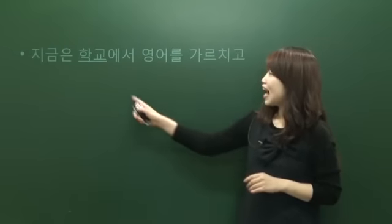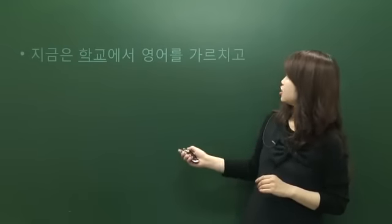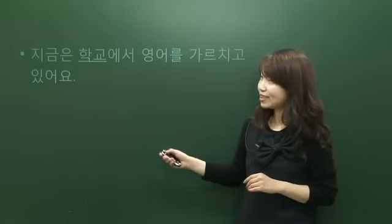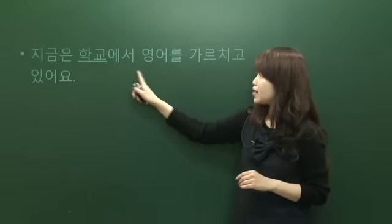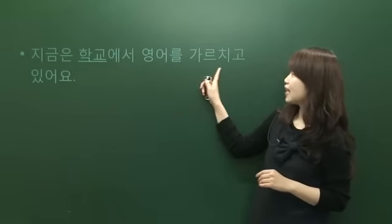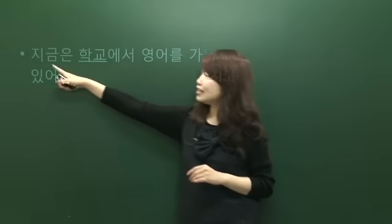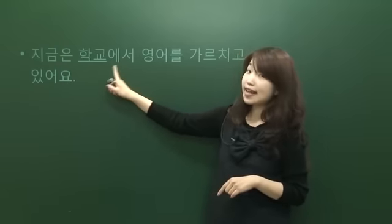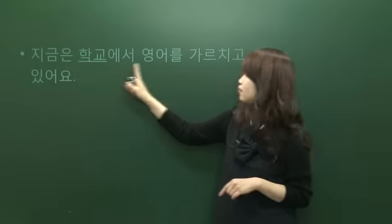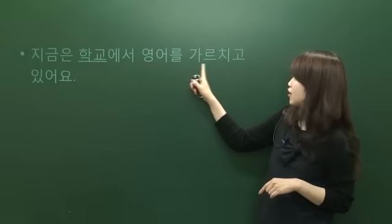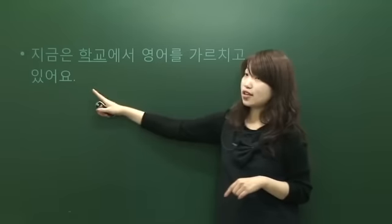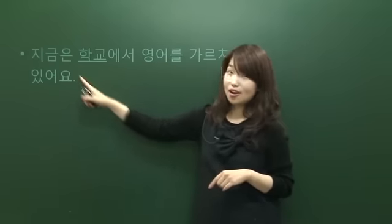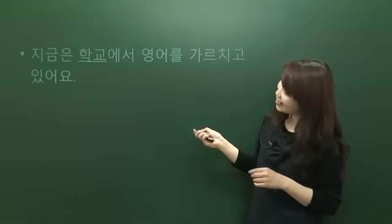지금은 학교에서 영어를 가르치고 있어요. 지금 means now. 학교에서 means at the school. 영어를 — English. 가르치고 있어요 — I'm teaching. So: I'm teaching English at school now.